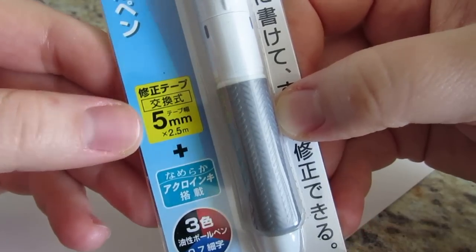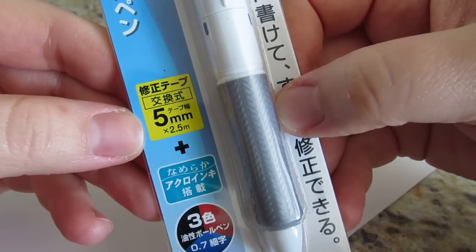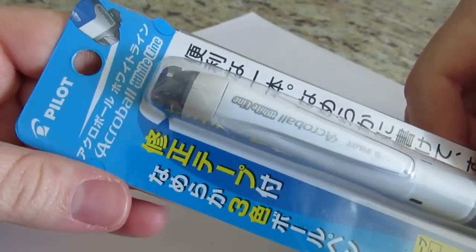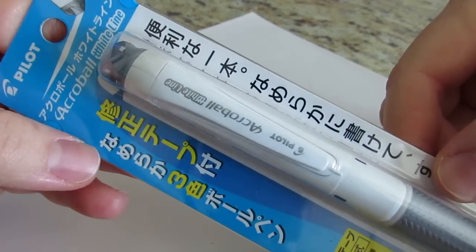I think this is telling me it's five millimeter correction tape and you get two and a half meters. That's my guess. So this is what the packaging looked like that I got and it just came in an envelope.